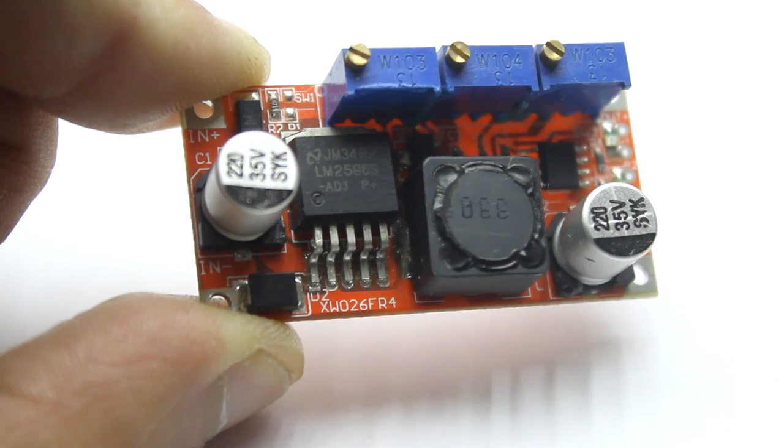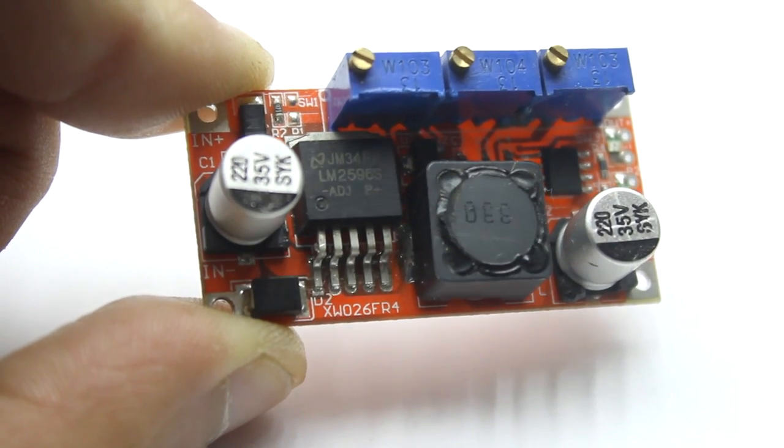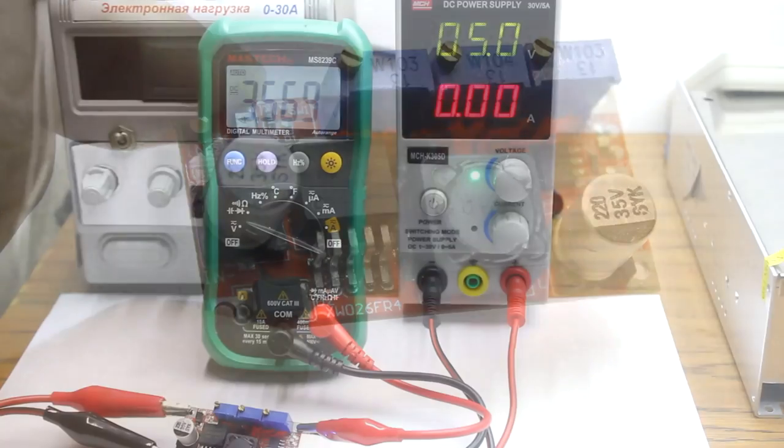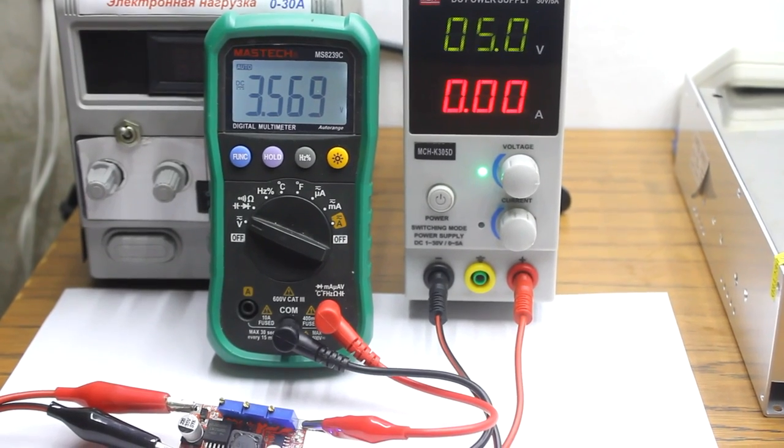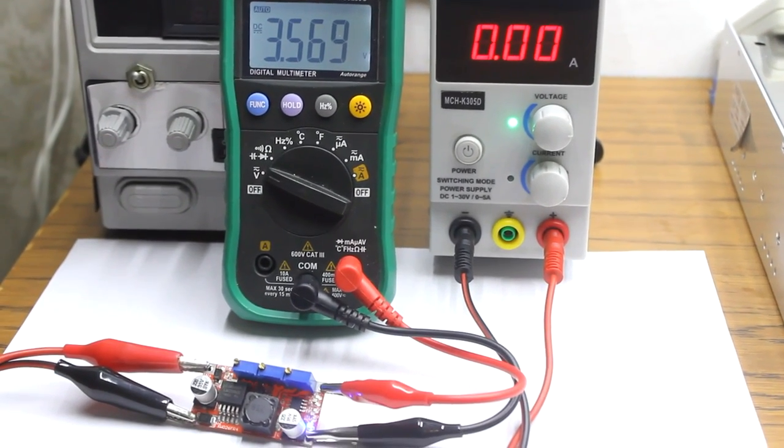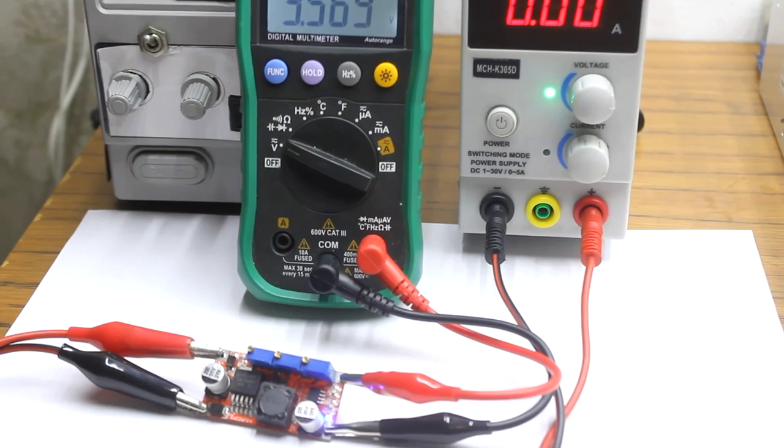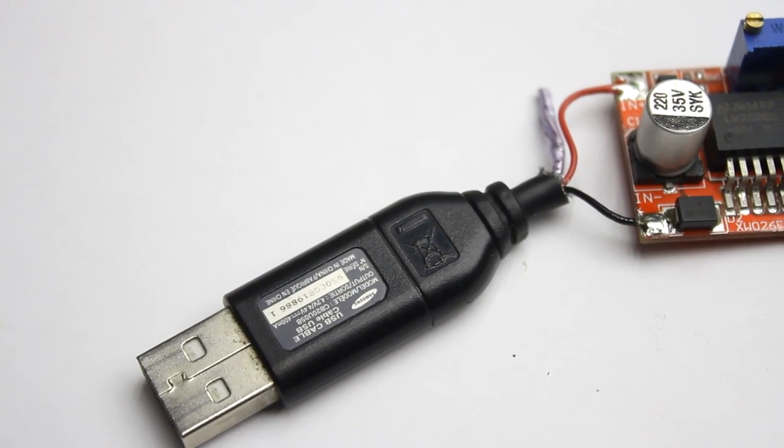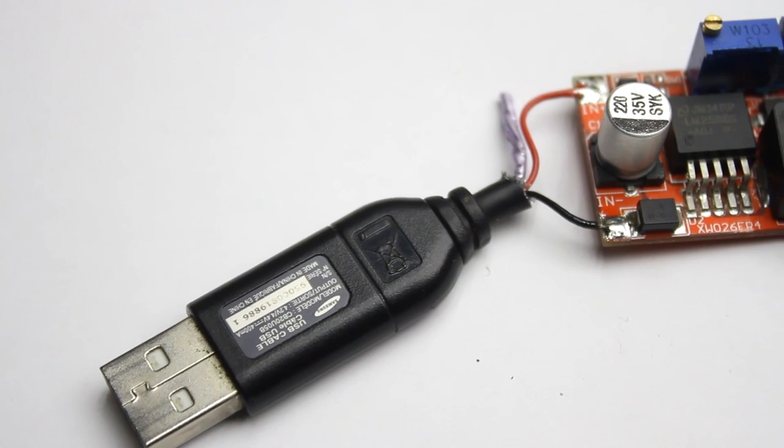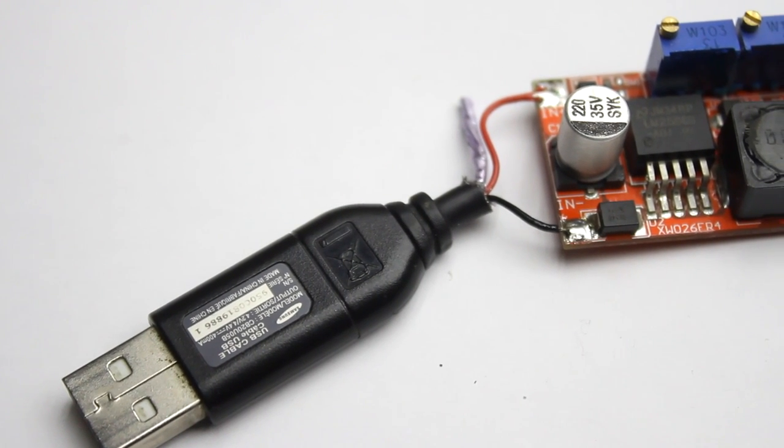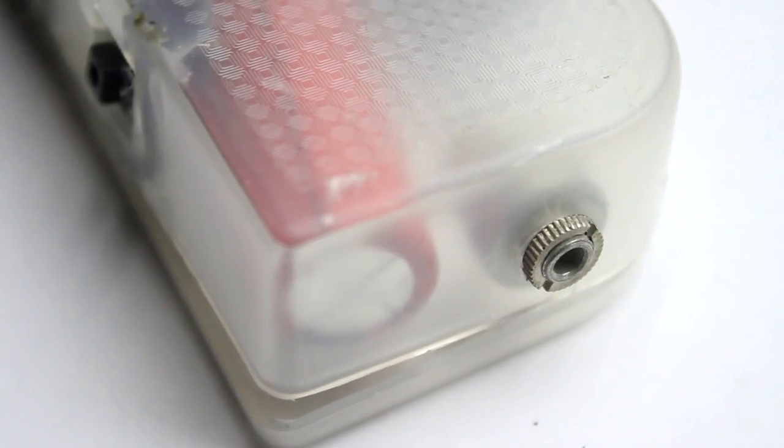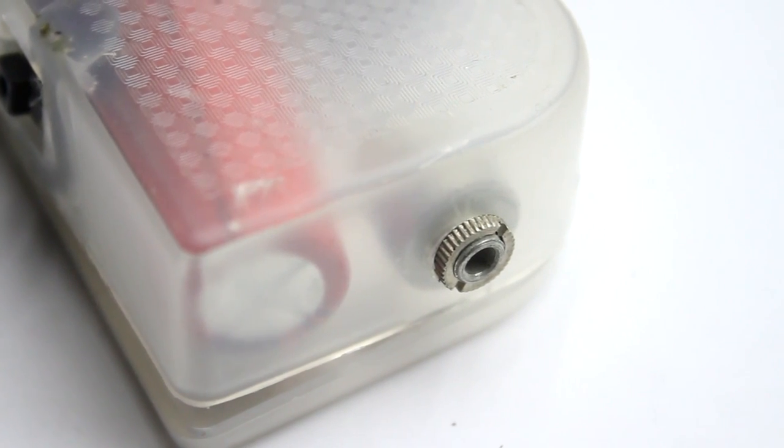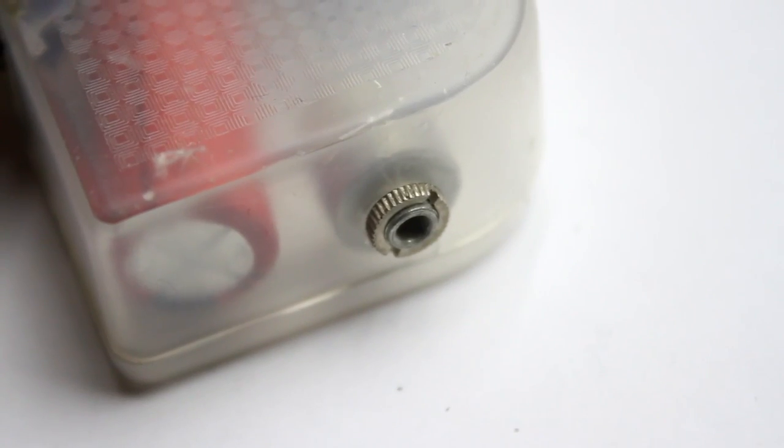The charger is simple. It is based on the LM2596 chip. You need to apply 5V to the input of the module, tune output at 3.6V and current 500mA. We need a charger which would allow charging the device from any USB port without overloading the latter. So the maximum charge current is 500mA and 3.6V is the voltage of a fully charged lithium ferrophosphate battery.